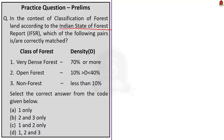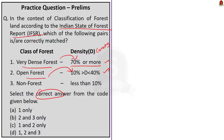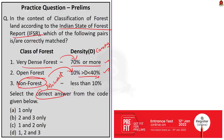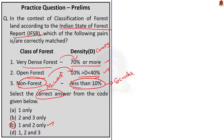The fifth question is about the classification of forests according to the Indian State of Forest Report — pairs are given and we must find which are correctly matched. The first and second pairs are correctly matched: very dense forest includes lands with tree canopy density of 70% and above, and open forest includes lands with tree canopy density of 10% or more but less than 40%. The third pair is wrong because non-forest lands are those not included in the above classes, and forest land with canopy cover less than 10% comes under scrub. The correct answer is option C: 1 and 2 only.